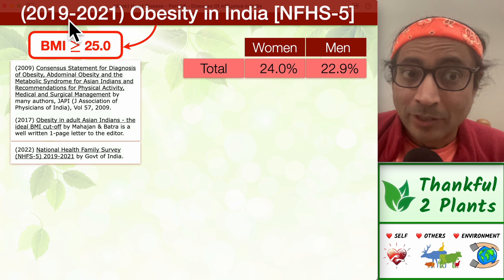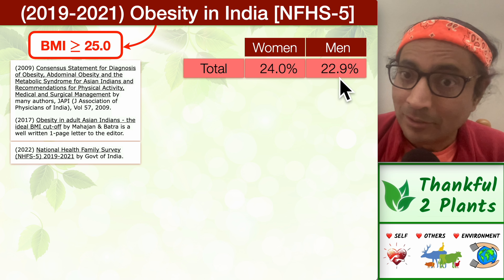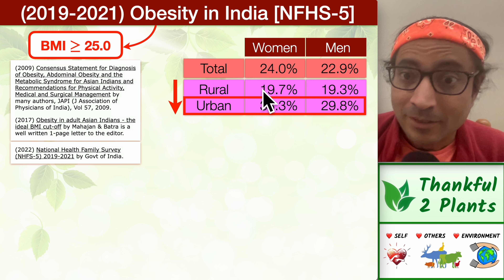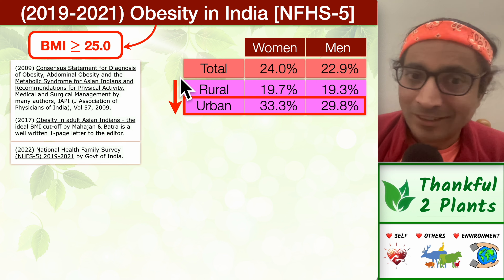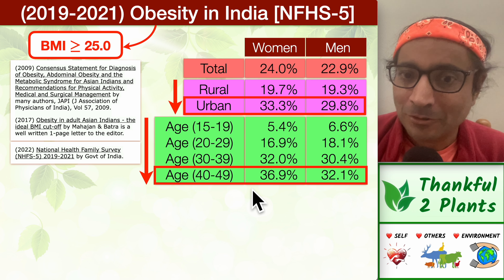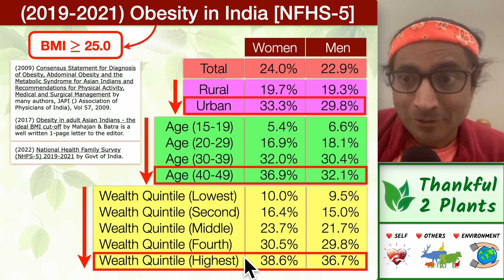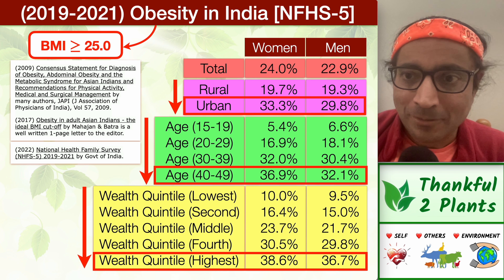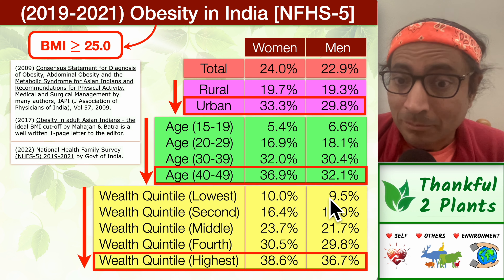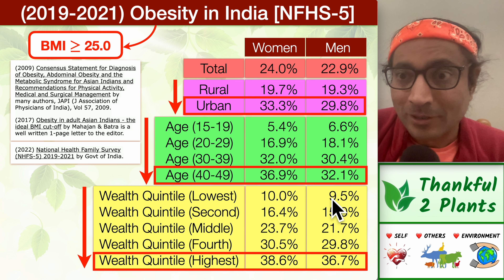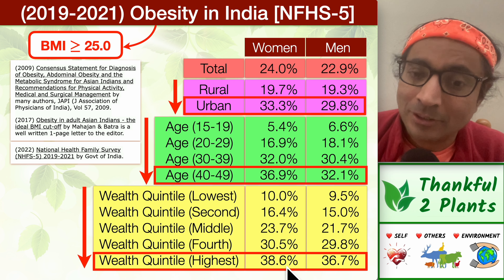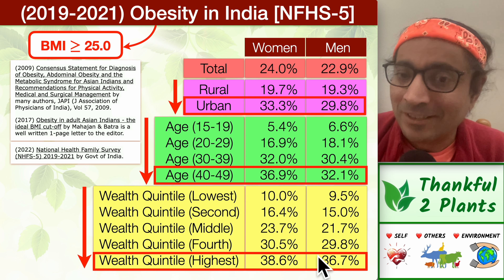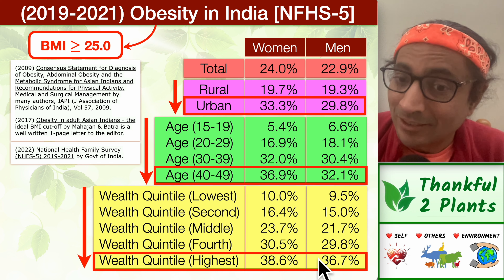In 2020 or so, by Government of India survey estimates, 23% to 24% of men and women have crossed BMI more than 25. In rural areas it's 20%, but urban areas is 30% to 33% — a very clear trend. Looking at wealth quintiles, the lowest bucket has 10% obesity, but the top 20% of the population has 37% to 39% who have crossed BMI exceeding 25. A dramatic change — 10% became 37% to 39%.